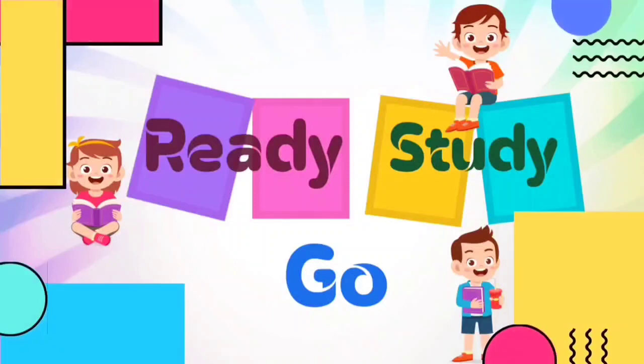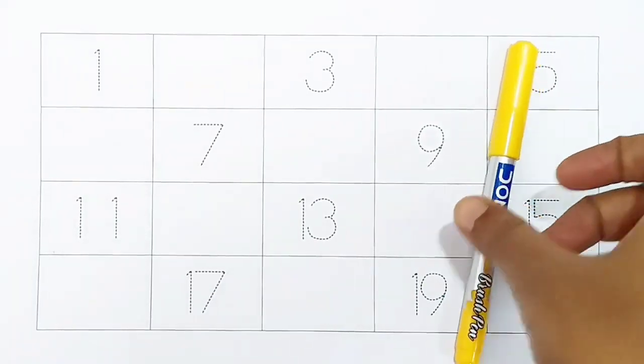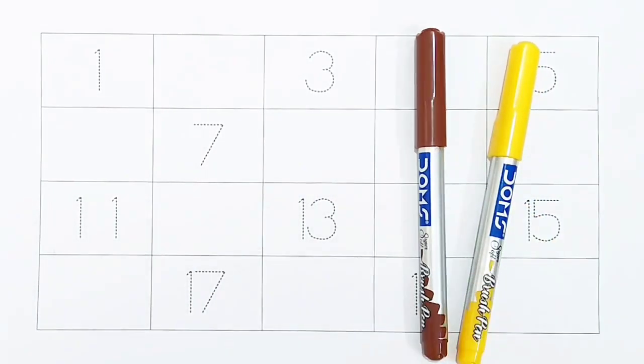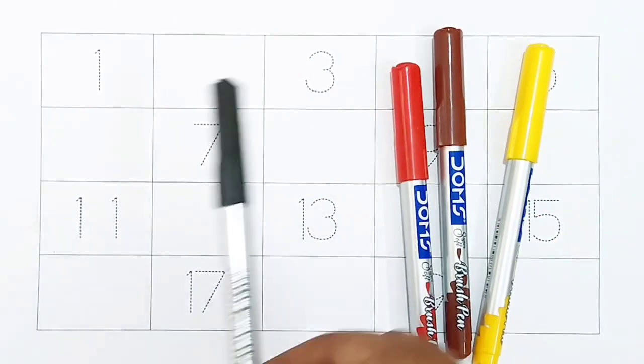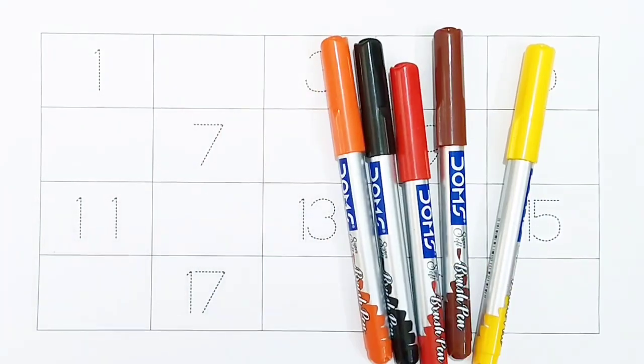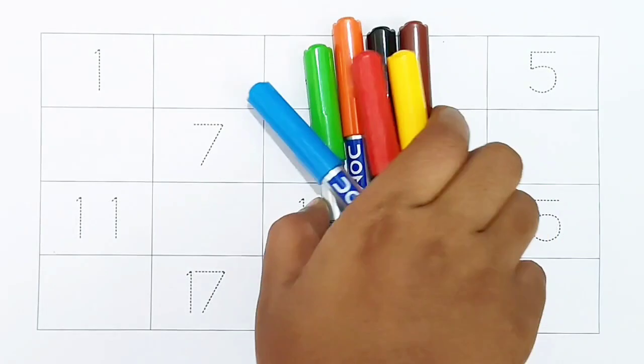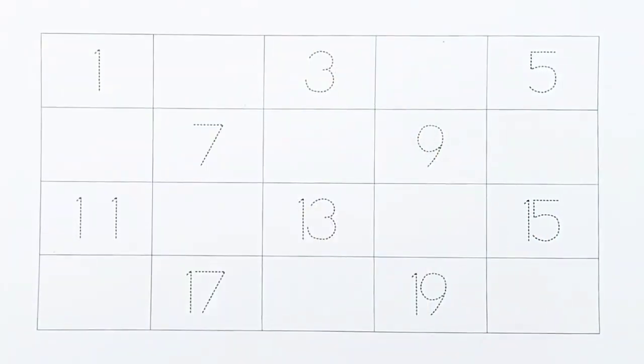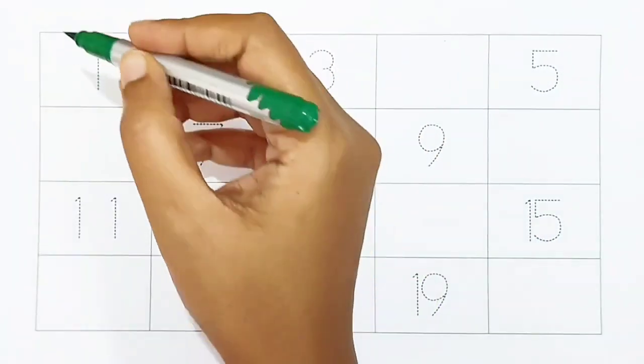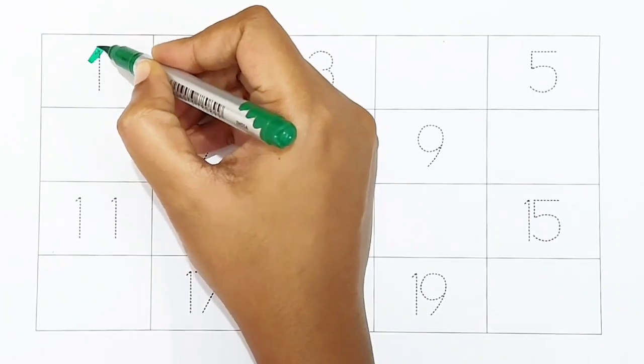Ready, study, go! Yellow color, brown color, red color, black color, orange color, green color, blue color. Hi kids, today we can learn the numbers from 1 to 20. Let's begin! 1 - dark green color.